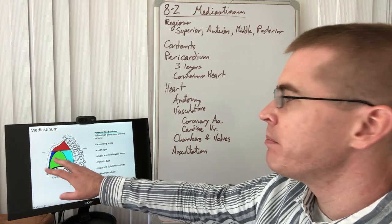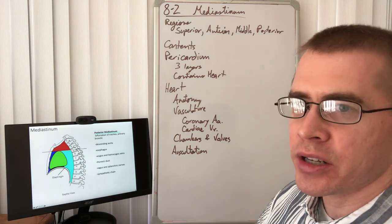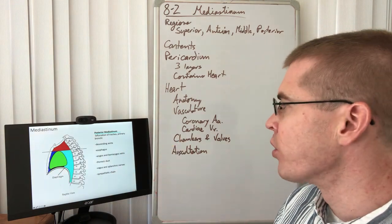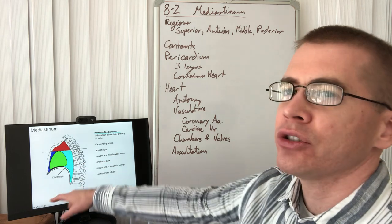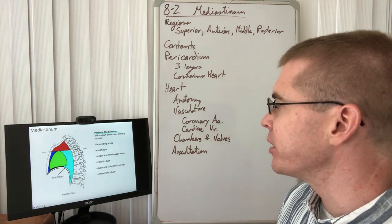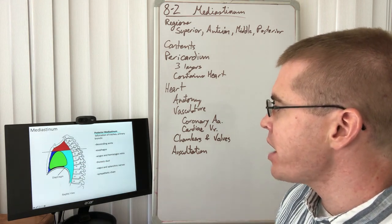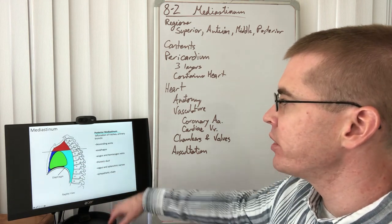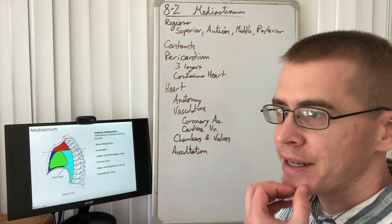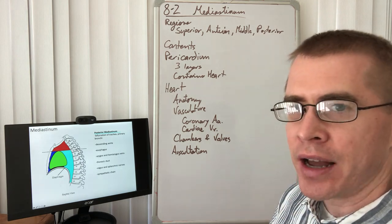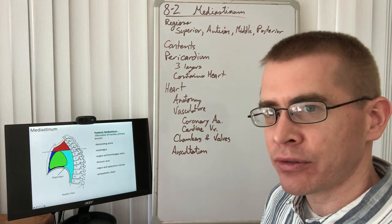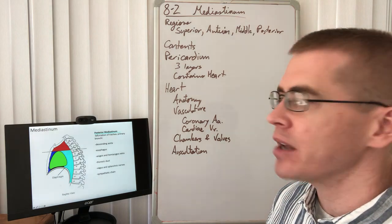The posterior mediastinum, behind the heart, contains the descending aorta as well as the esophagus traveling through to the stomach, and various other structures that end up traveling through the diaphragm via the hiatuses and foramina discussed previously.